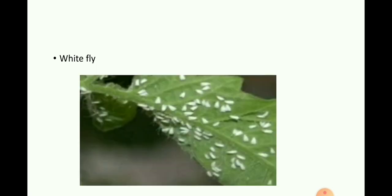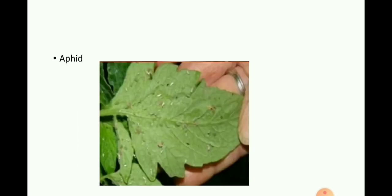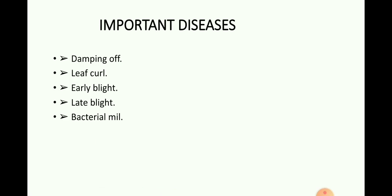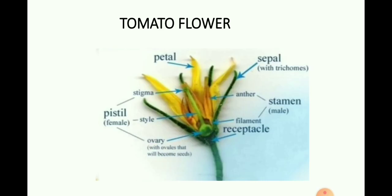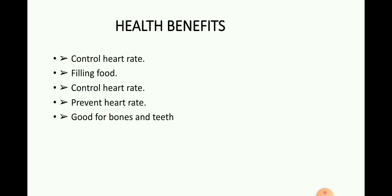Tomato insects include tomato fruitworm, whitefly, and aphid. Important diseases include damping off, leaf curl, early blight, late blight, and bacterial wilt. Cross pollination involves emasculation, pollination, and tagging — this is a tomato flower. Health benefits: Tomatoes control heart rate, are a filling food, prevent heart disease, and are good for bones and teeth. Thank you.